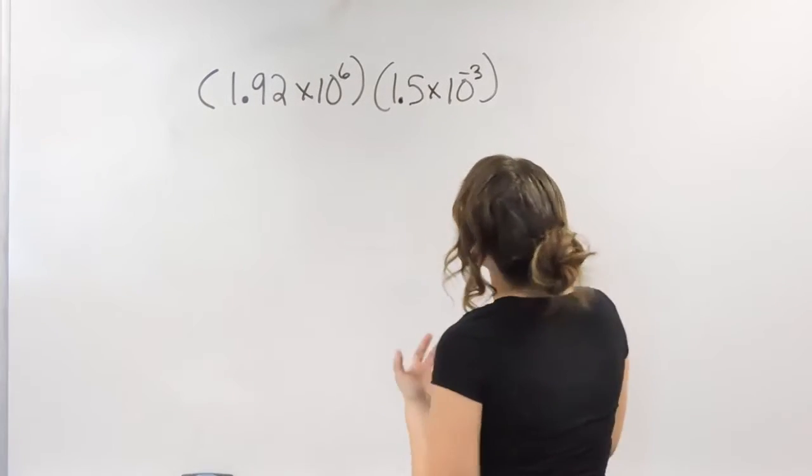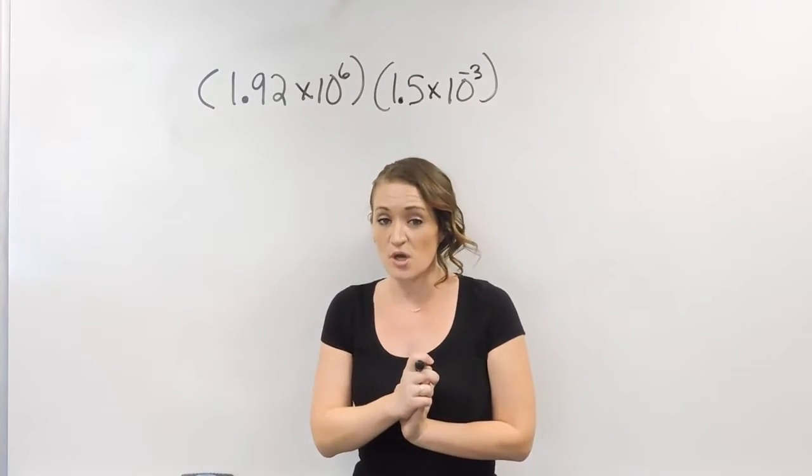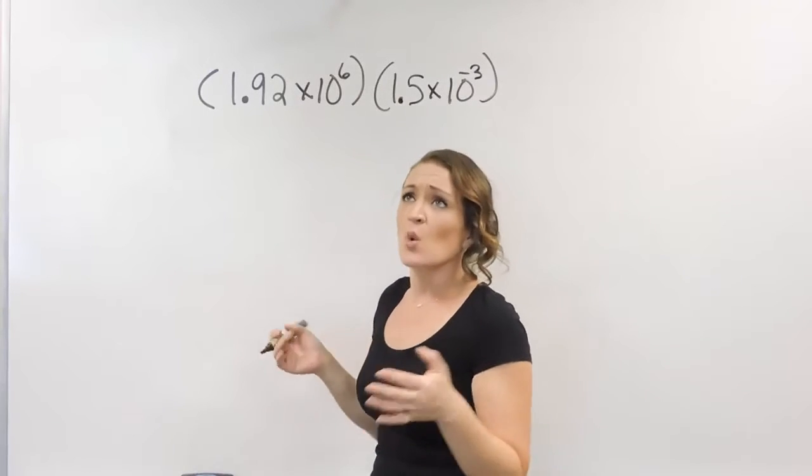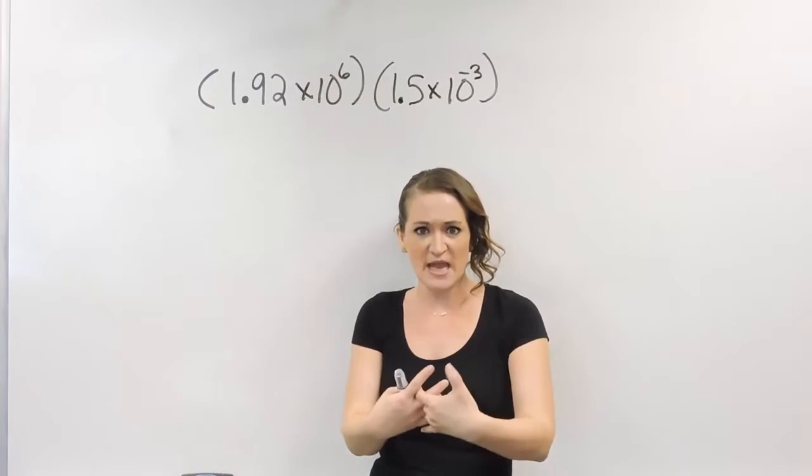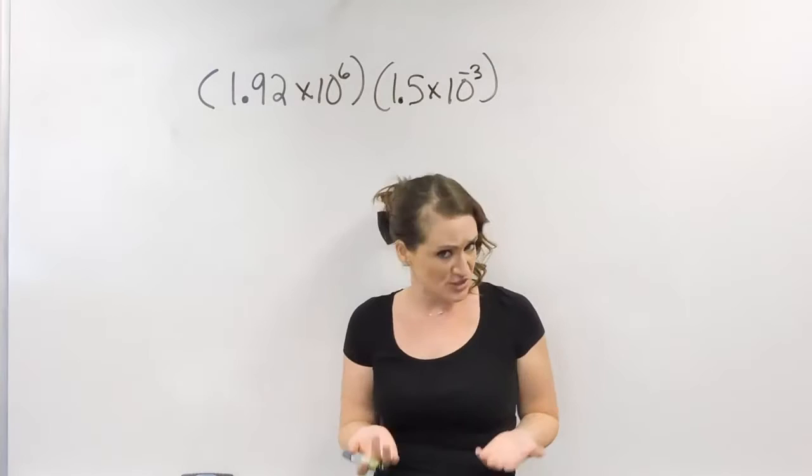So the way that we do this is using regular multiplication and then using the product rule. When it comes to dealing with multiplying different things, what we need to keep in mind is that we can only multiply like things together: a number with a number, a variable with a variable, and so on.